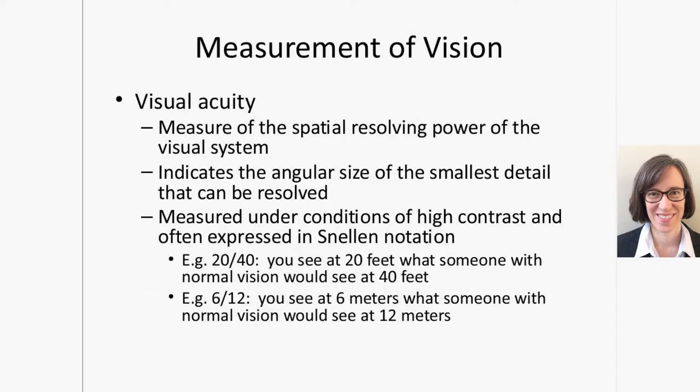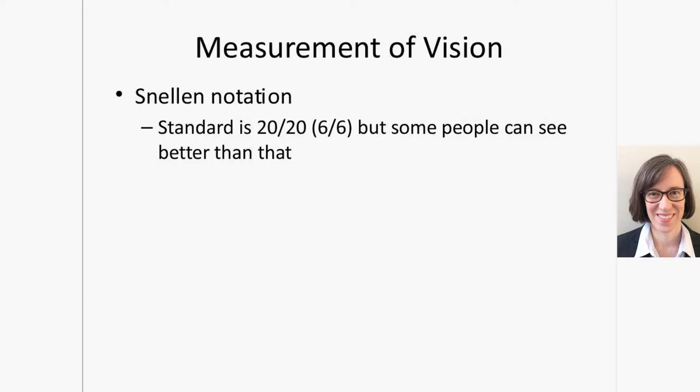Visual acuity is a measure of the spatial resolving power of your visual system. It indicates the angular size of the smallest detail that can be resolved, and it's measured under conditions of high contrast using a letter chart with black letters on a white background. It's typically expressed in Snellen notation — for example, if you have 20/40 vision, that means you see at 20 feet what someone with normal vision would see at 40 feet. We can also express it in meters: 20/40 equals 6/12. The standard is 20/20, or 6/6 in meters, though some people can see even better, like 20/10.